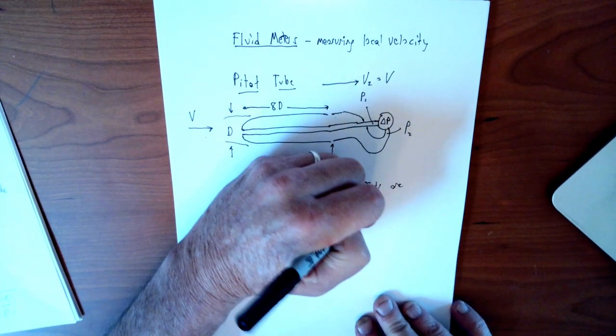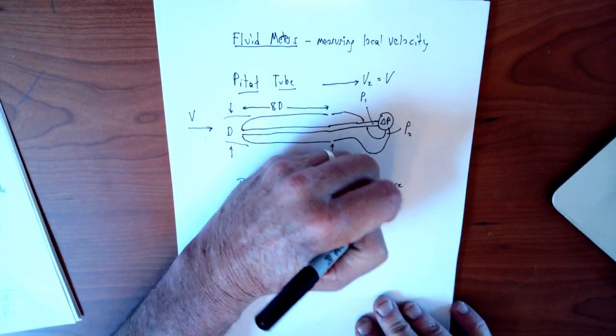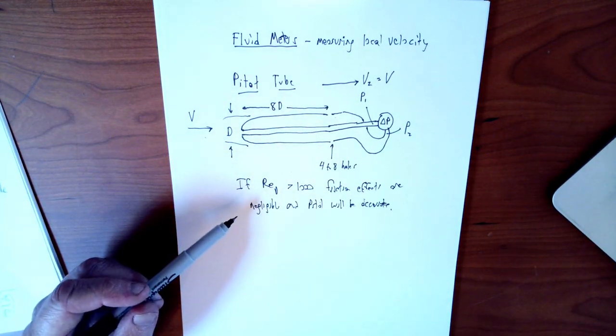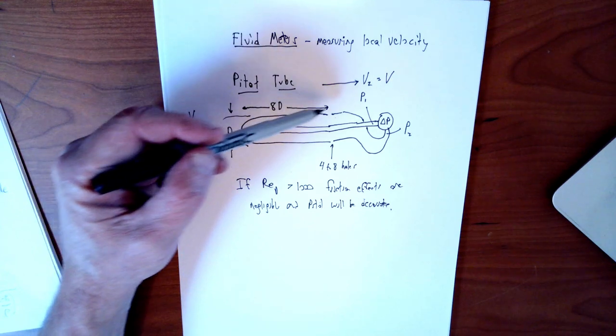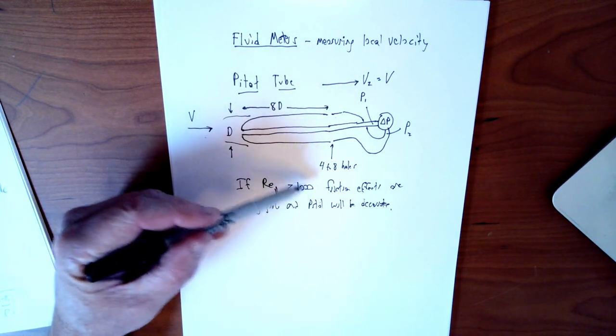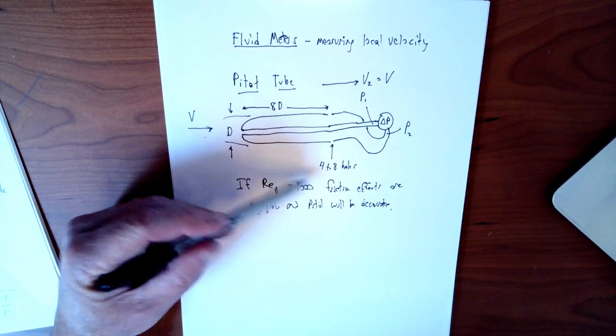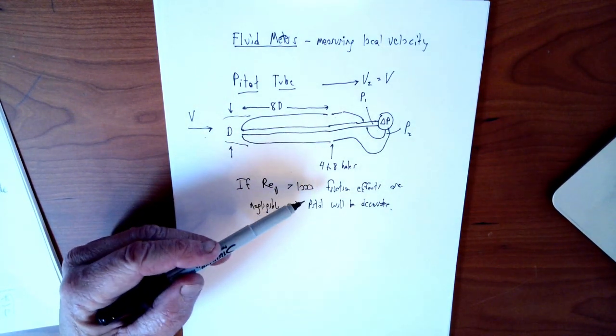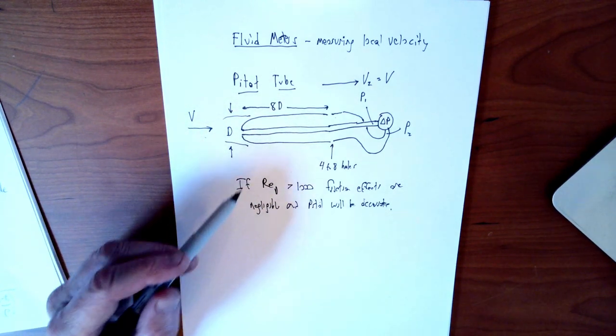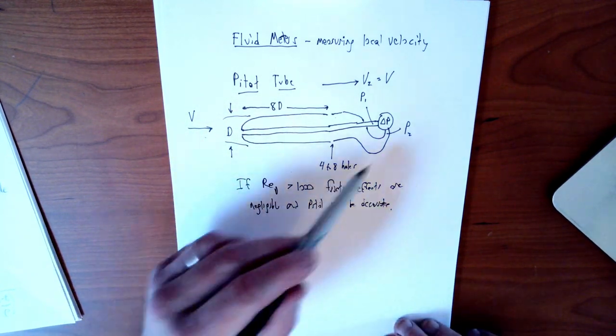So that's nice. We have a little rule of thumb here for when you can use a Pitot tube. If the Reynolds number is less than a thousand, of course, you're gonna have all kinds of frictional slowing of the flow along the surface. This is the ratio of inertial effects to friction effects. So a high ratio means that inertial effects are dominant and the friction effects are relatively small compared to that.